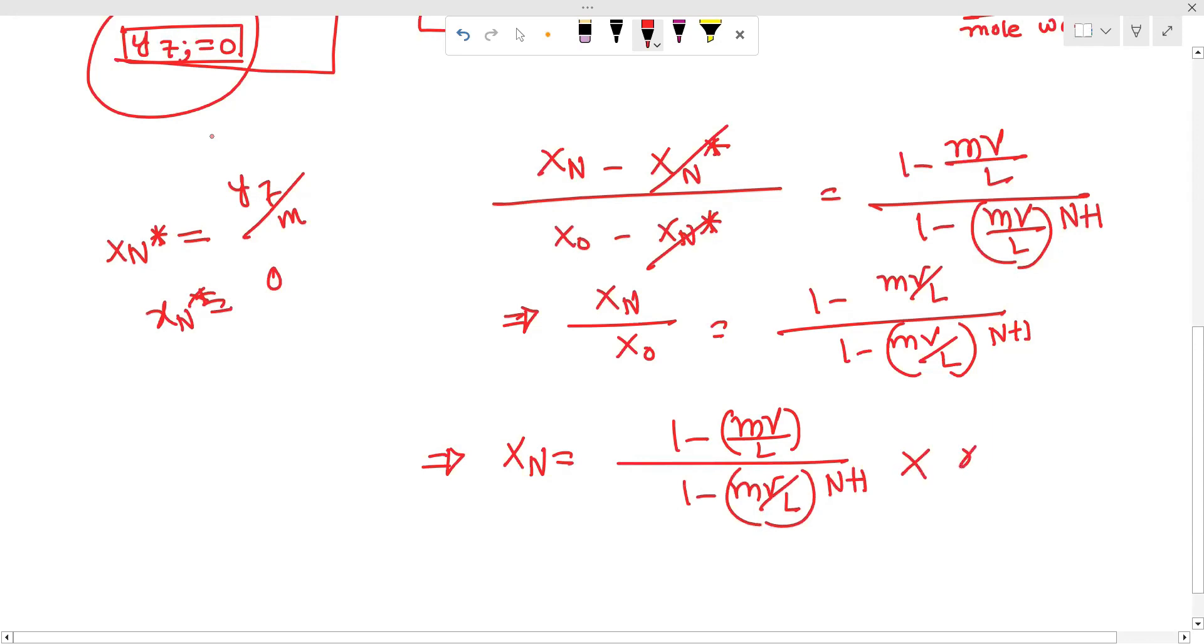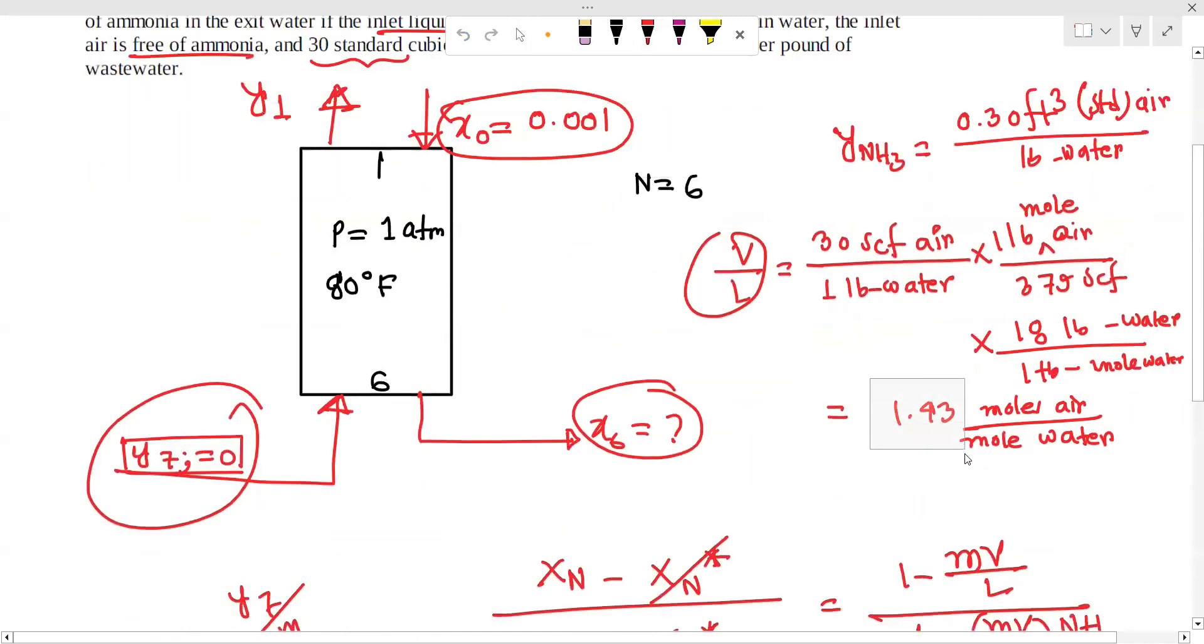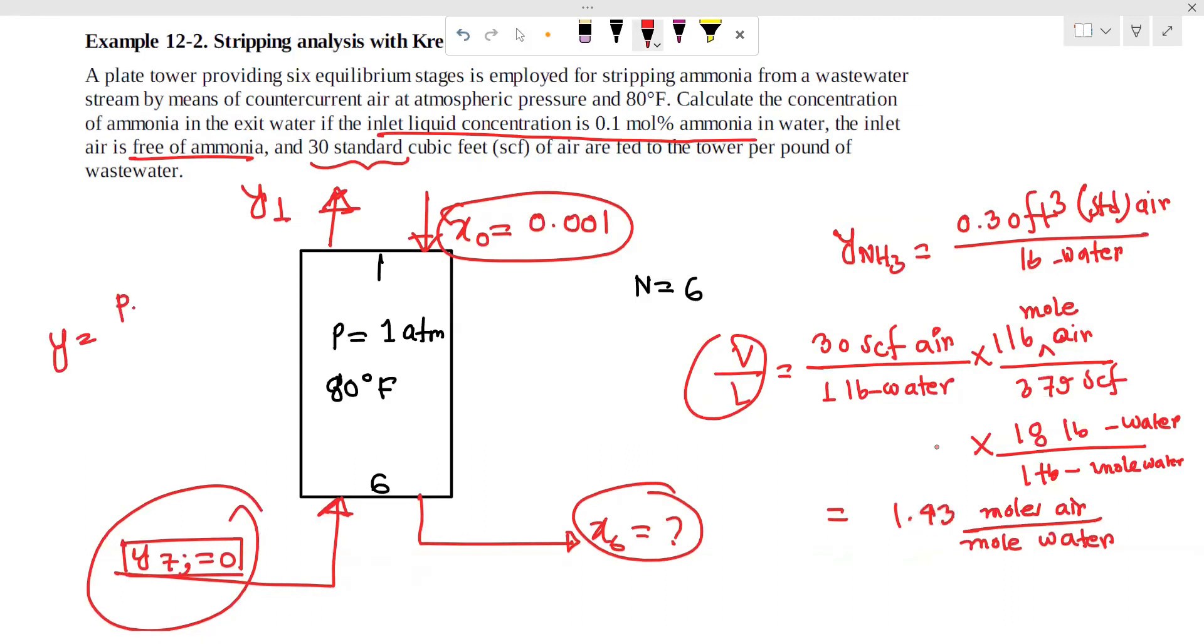mV/L equals 1.43. y is equal to H by PV into x. So if you can see, y is equal to 1.414 into x.